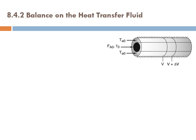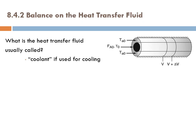You can see here the reactor — it's a concentric tube. The inner tube is for the reaction mixture, the reactor itself, and the outer tube is where the heat transfer fluid passes. The heat transfer fluid is usually called coolant if used for cooling, or heating medium if used for heating.